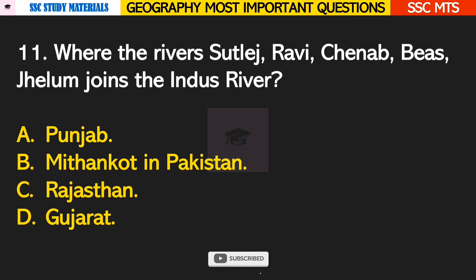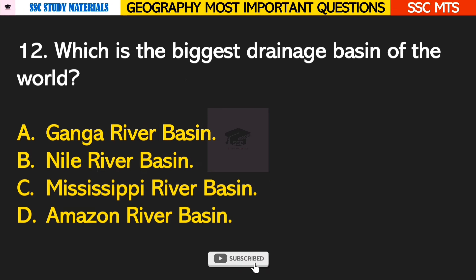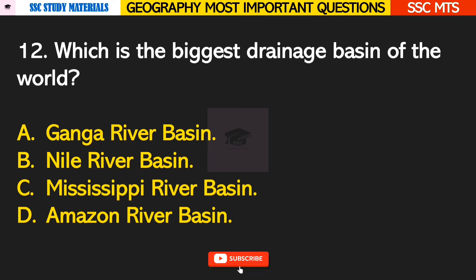Question number 11: where do the rivers Satlaj, Ravi, Chenab, Beas, and Jhelum join the Indus River? Answer B — the above mentioned rivers join the Indus River at Mithankot in Pakistan. Question number 12: which is the biggest drainage basin of the world? Answer D — Amazon River Basin.